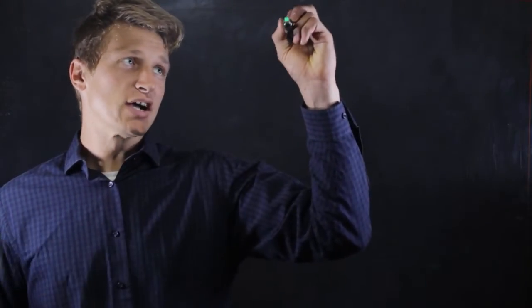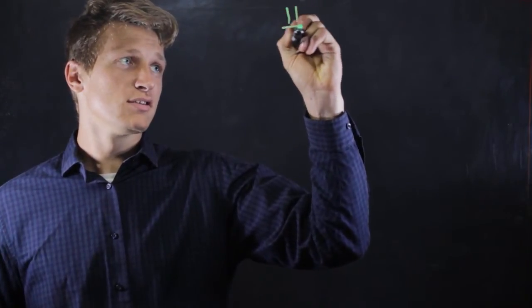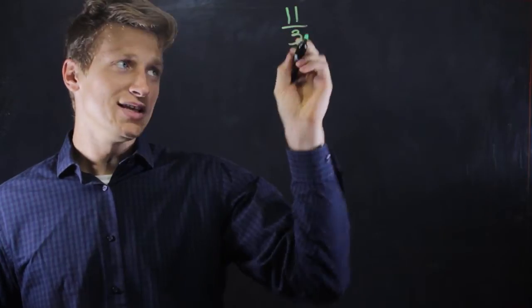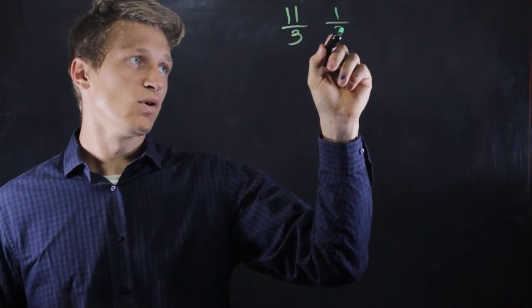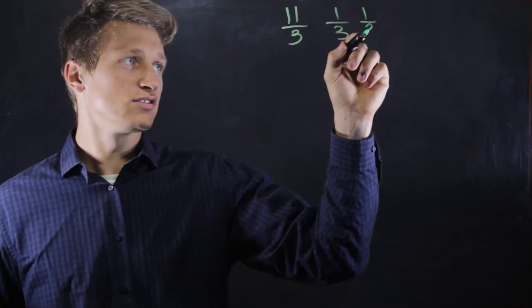An improper fraction is where we have a numerator larger than the denominator. Proper fractions include one-third, one-half, and so on.